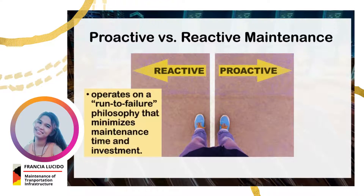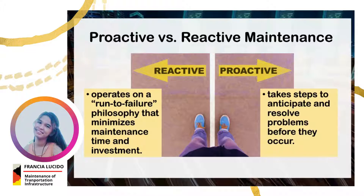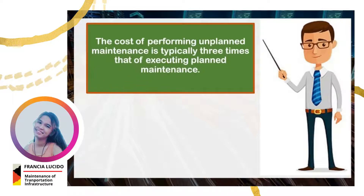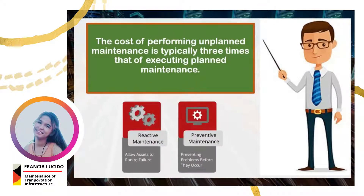In reactive maintenance, it operates on a run-to-failure philosophy that minimizes maintenance time and investment. Proactive maintenance, on the other hand, takes steps to anticipate and resolve problems before they occur. The keyword in reactive maintenance is run-to-failure, which means maintenance is performed after equipment has broken down. This kind of maintenance is costly because the structure tends to fail unexpectedly, resulting in higher costs for repairs and unplanned downtime. Conversely, proactive or preventive maintenance addresses possible issues before they occur, thus reducing the chances of unexpected equipment failure.